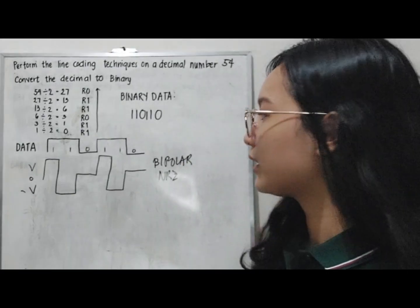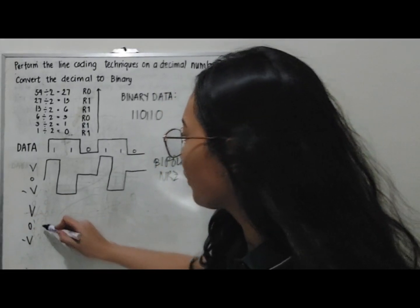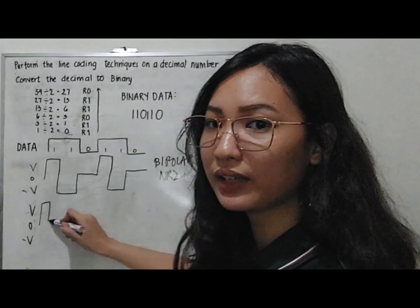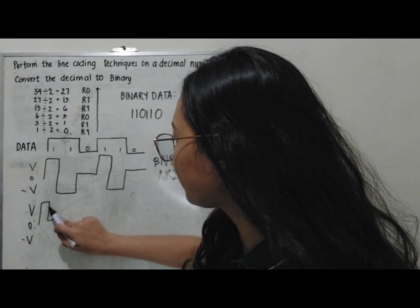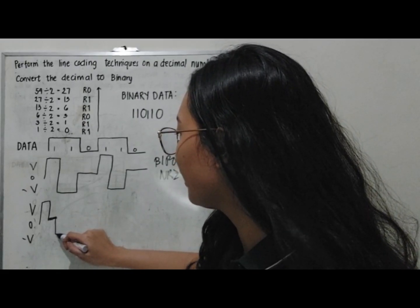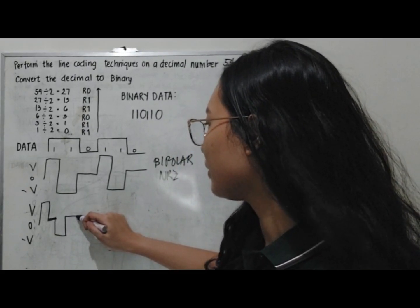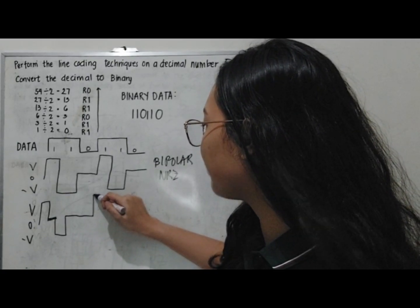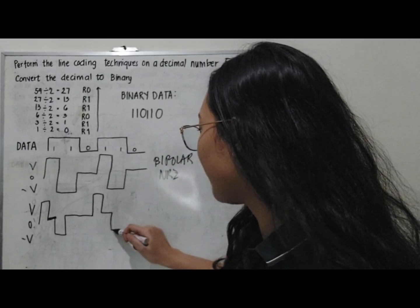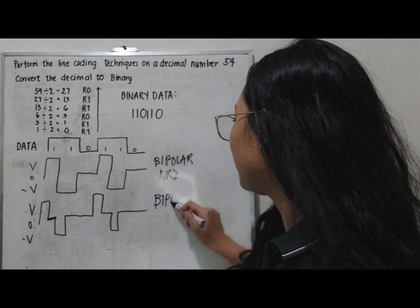For the bipolar RZ of decimal 54: positive half bit back to zero, then negative half bit back to zero, then zero, positive half bit back to zero, negative half bit back to zero, then zero. This is the bipolar RZ waveform.